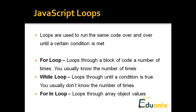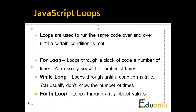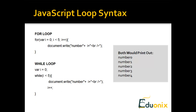Loops are very common in just about every programming language. They allow you to run a certain block of code over and over until a certain condition is met. In JavaScript we have for loops, while loops, and for-in loops. There's also a do-while loop but it's not really important to cover right now. A for loop is usually used when you know the number of times it will loop. A while loop is used when you don't know how many times it will run. And the for-in loop is specifically used to loop through array objects.